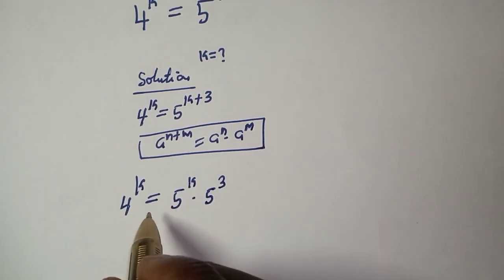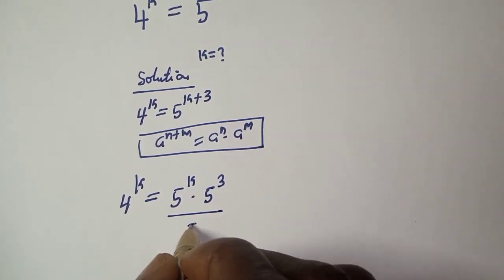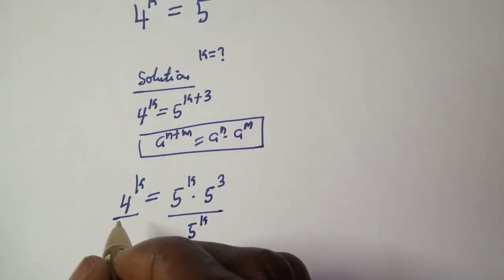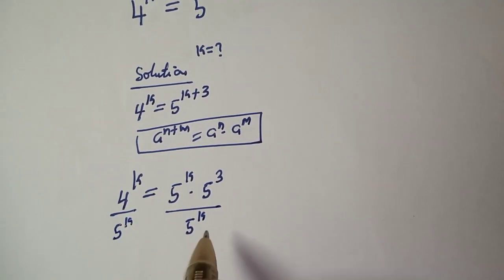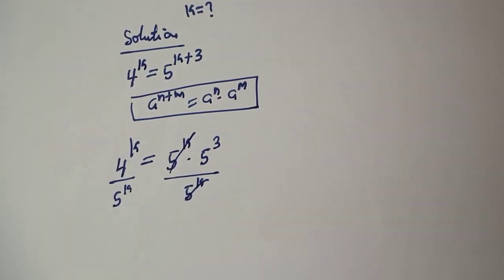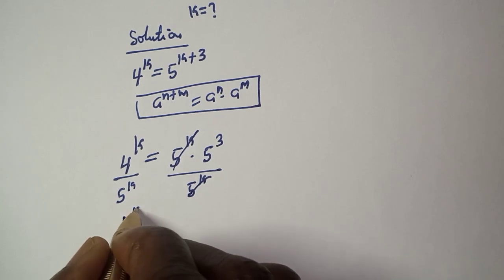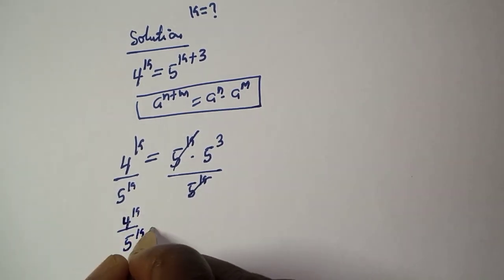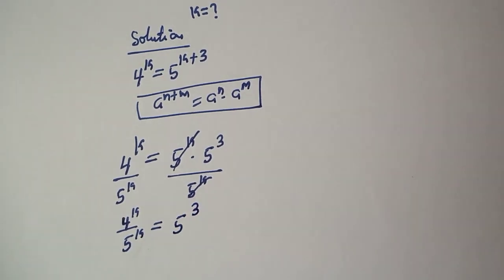Now, let's divide both sides of this equation by 5 raised to power k. This will cancel the 5 raised to power k on the right side, giving us 4 raised to power k over 5 raised to power k is equal to 5 raised to power 3.